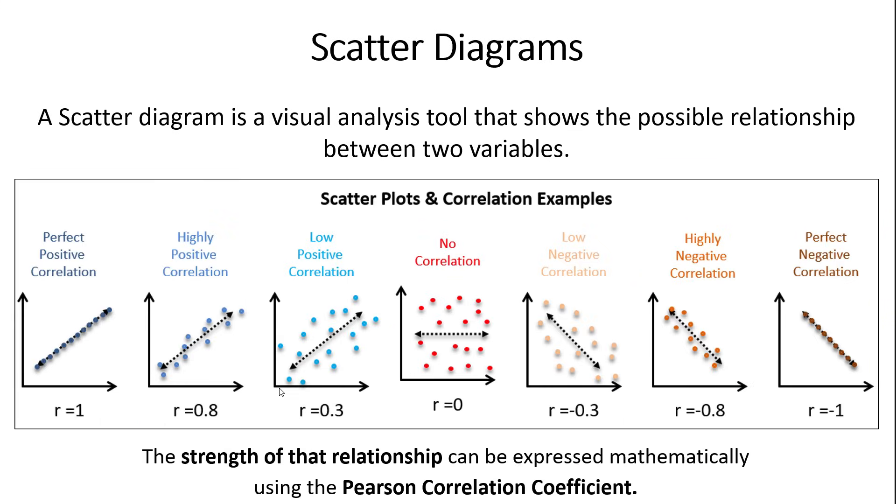Once you've done your scatter diagram, you can quantify the relationship between those two variables. What I'm showing here is the Pearson correlation coefficient. This coefficient ranges from positive one all the way to negative one, from a perfectly positive correlation to a perfect negative correlation. As we get closer to zero, we start to lose that relationship. An r value of zero means there's no correlation between those two parameters. As x changes, y basically does whatever it wants.